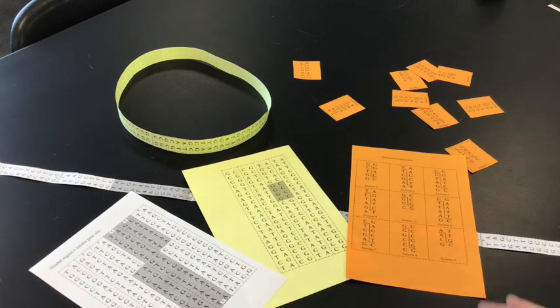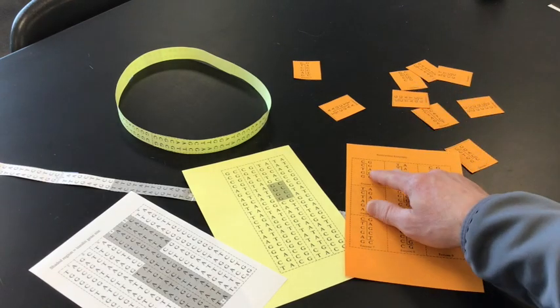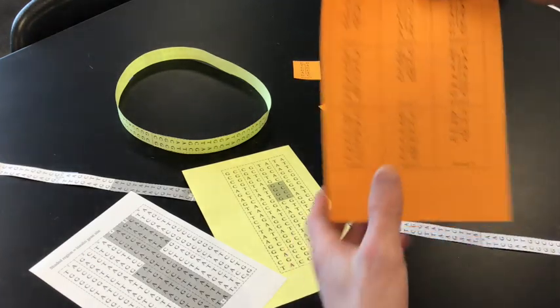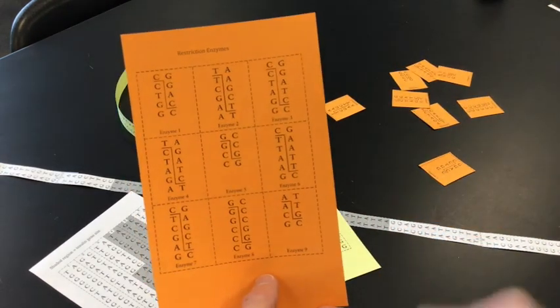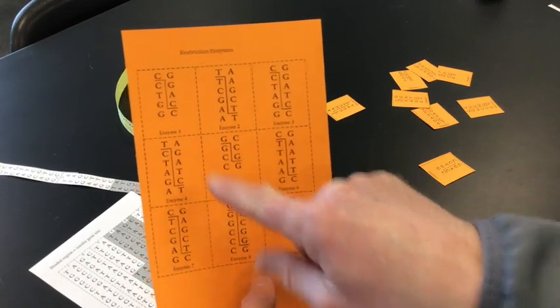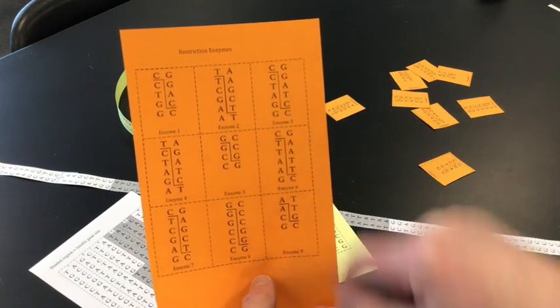So in this activity we had three handouts. A handout on restriction enzymes with the restriction sites shown and where the cuts would be. Notice these are all sticky end cuts, where a blunt cut would go straight across.